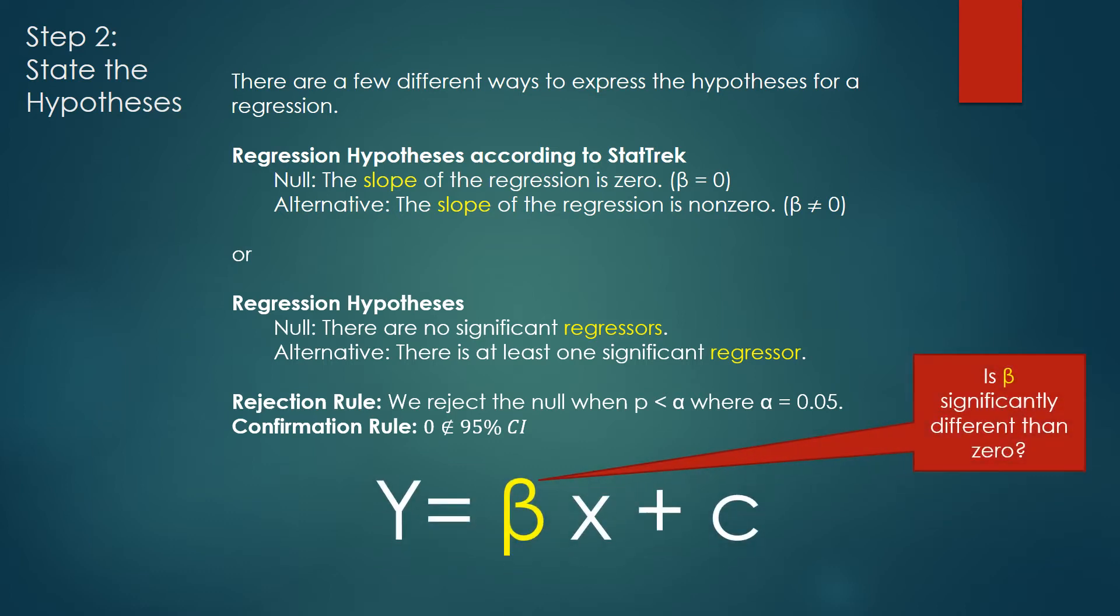All this stat talk distills down to a simple question or a simple idea. Is beta in our linear regression or our best fit line significantly different than 0? If it is, the regressor X is significant. If it's not, then we don't have any significant regressors.